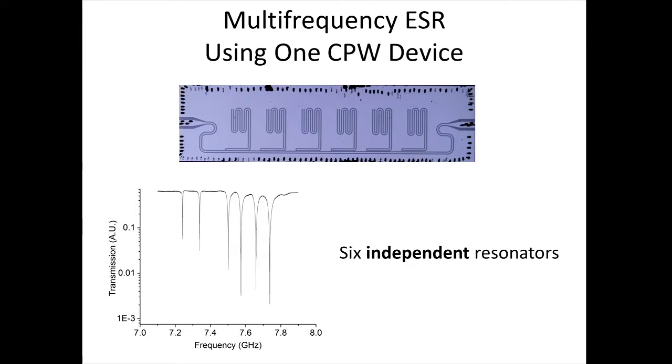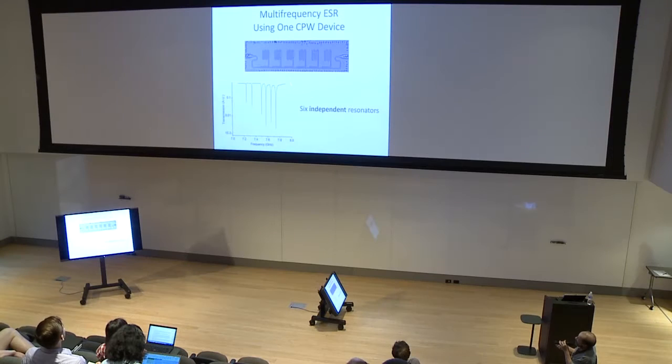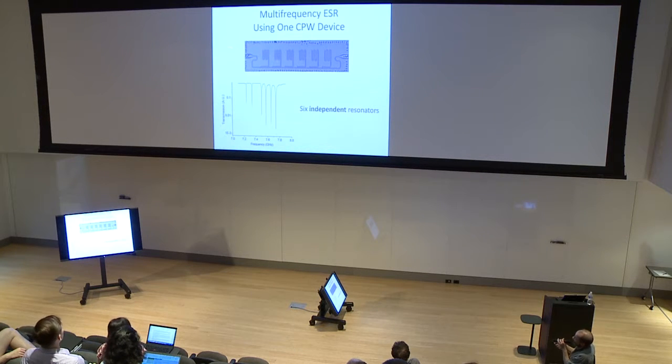Another proposal, which we didn't try it yet, so I showed you before this type of structures where we have one feed line for microwave and a bunch of resonators. You can easily make this resonator be in different lengths, meaning different frequencies, and on network analyzer, you can define this frequency very well. These frequencies are totally decoupled from each other, meaning that in principle, you can make one device, a bunch of resonators on them, tuned to the right frequencies that you want to measure, and you can do multi-frequency ESR in one experiment using one chip.